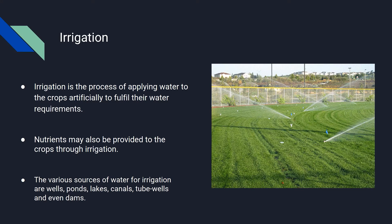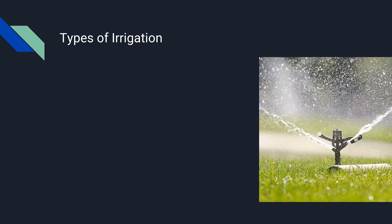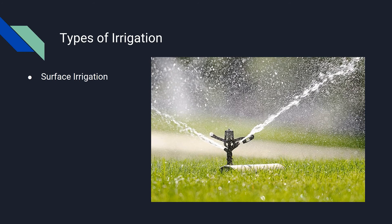Types of Irrigation. Surface Irrigation: In this system, no irrigation pump is involved. Water is distributed across the land by gravity.